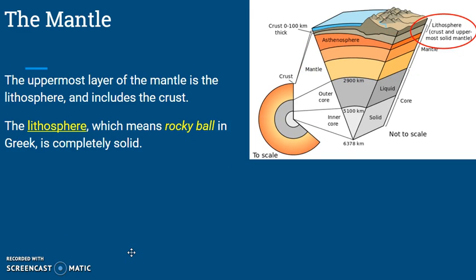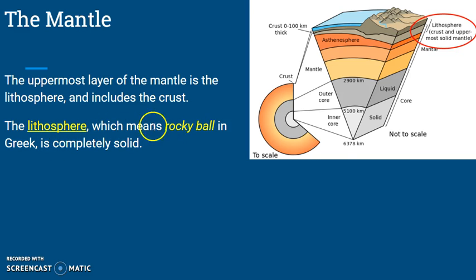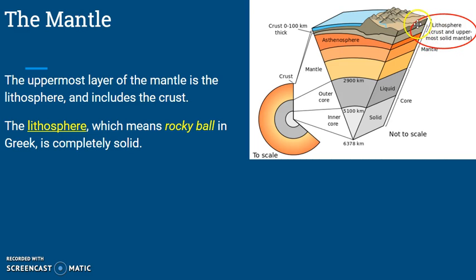The uppermost layer of the mantle is called the lithosphere, and it includes the crust. The lithosphere, which means 'rocky ball' in Greek, is completely solid. So the uppermost layer of the mantle right here is solid and it's called the lithosphere.